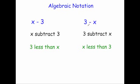This one on the other hand means 3 subtract x, so it means x less than 3. Now if you had for instance that x was equal to 10, these would have two different values. This would be 10 subtract 3, which would be equal to 7. But this one on the other hand means 3 subtract 10, which would be equal to minus 7.